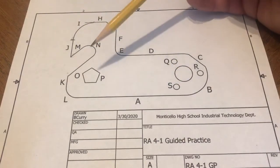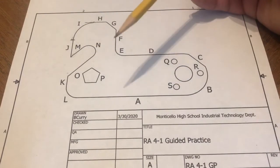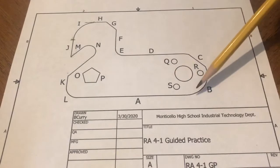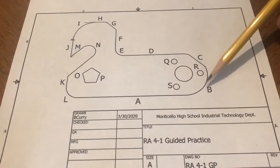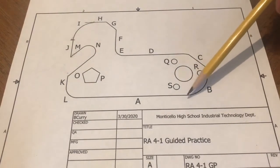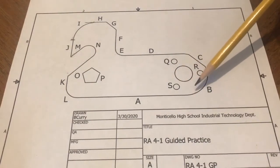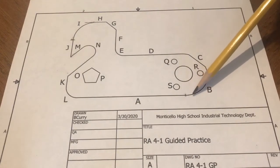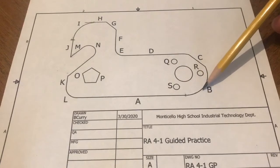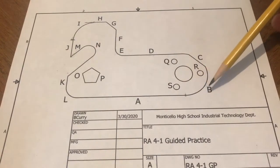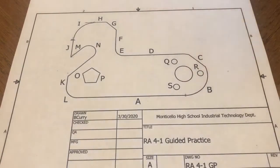Line A and arc B — what's that relationship? Again, that is a tangent point. You have a tangent point right here where the endpoint of line A comes in and just touches the endpoint of arc B.